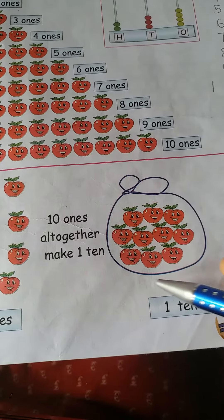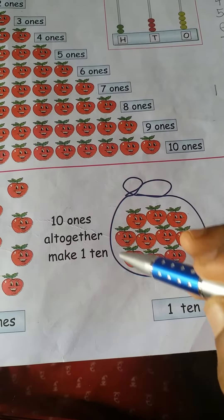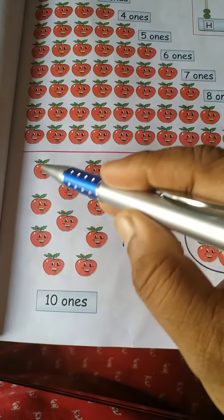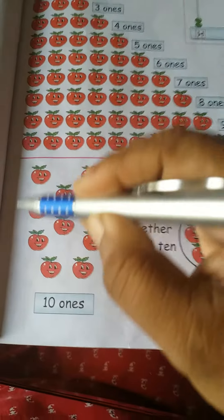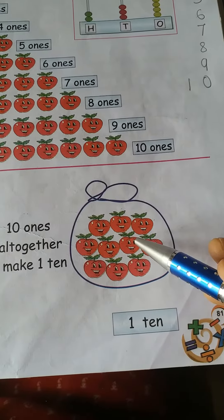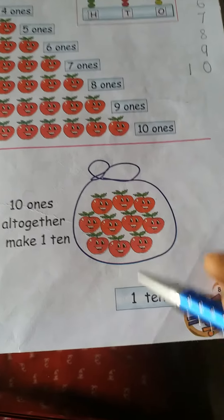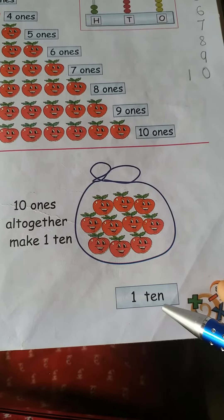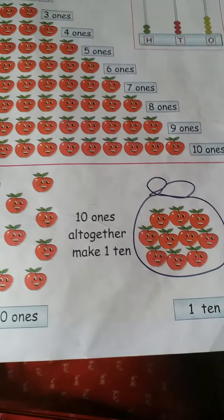Together we can put them here. If we keep these apples in a bag, together what can we say? One ten. Understood? Hare Krishna.